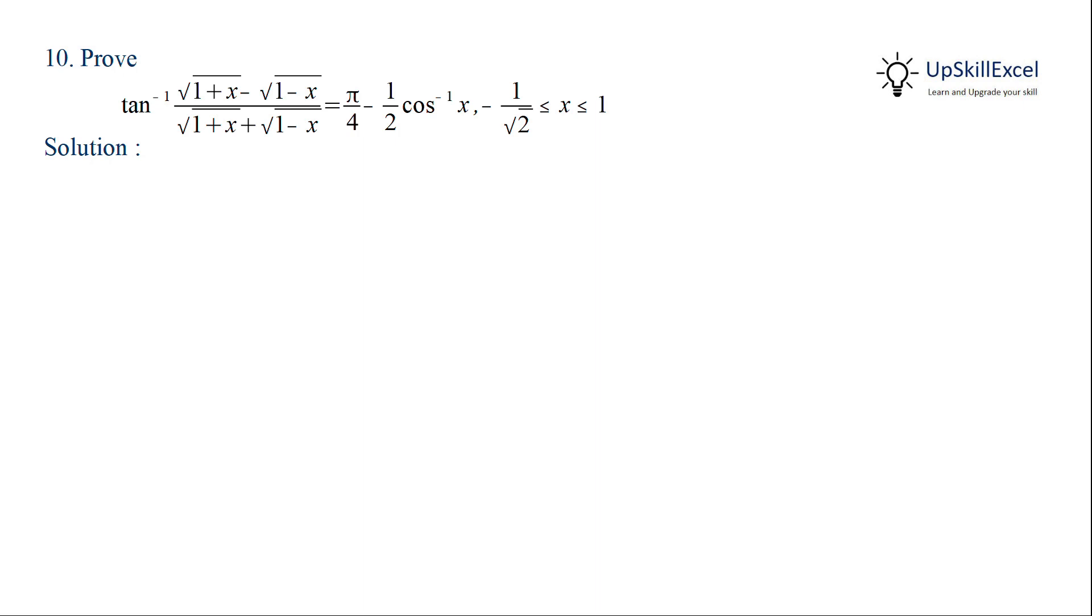The left hand side is a tan inverse function having two under root terms 1 plus x and 1 minus x, and the right hand side is pi by 4 minus half of cos inverse x. We are also given that x belongs to minus 1 by root 2 to 1.